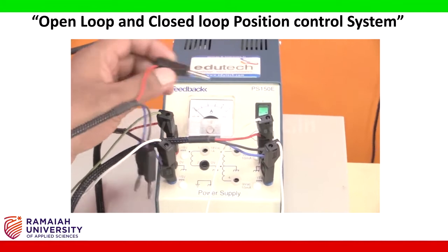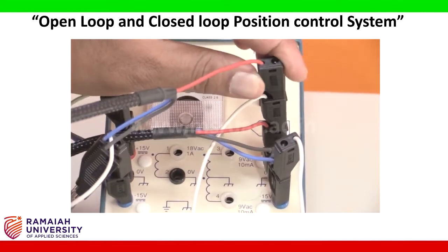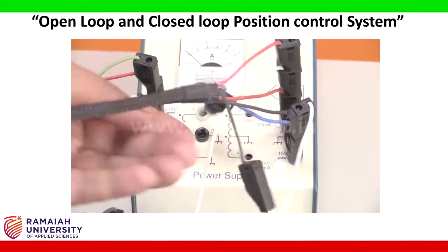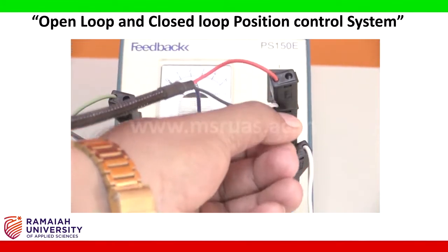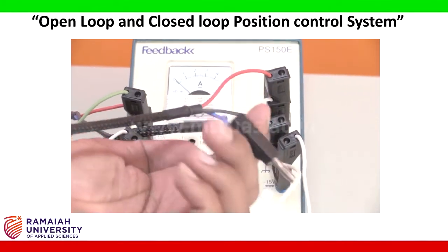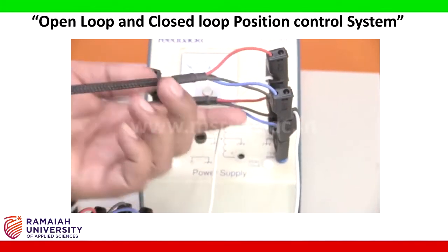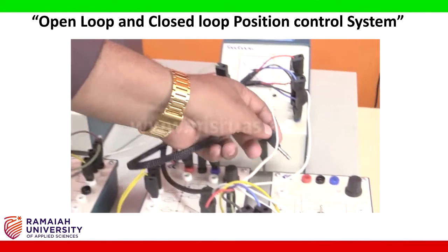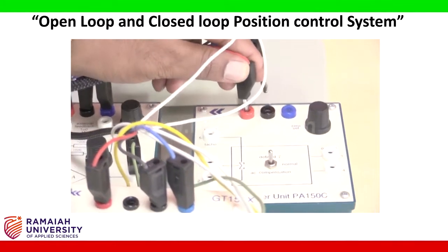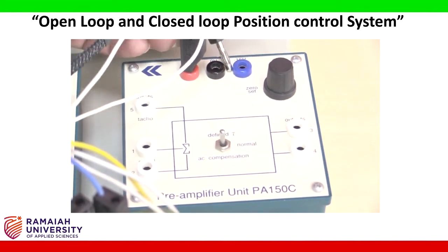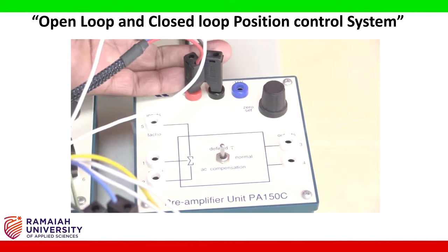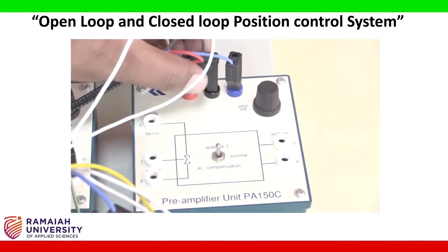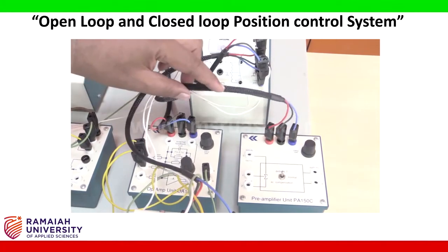I connect the red wire to plus 15 of the power supply, then the ground to the center terminal. The blue wire connects to minus 15. The other ends go to the preamplifier unit — red wire to plus 15, black wire to ground zero, and blue wire to minus 15.